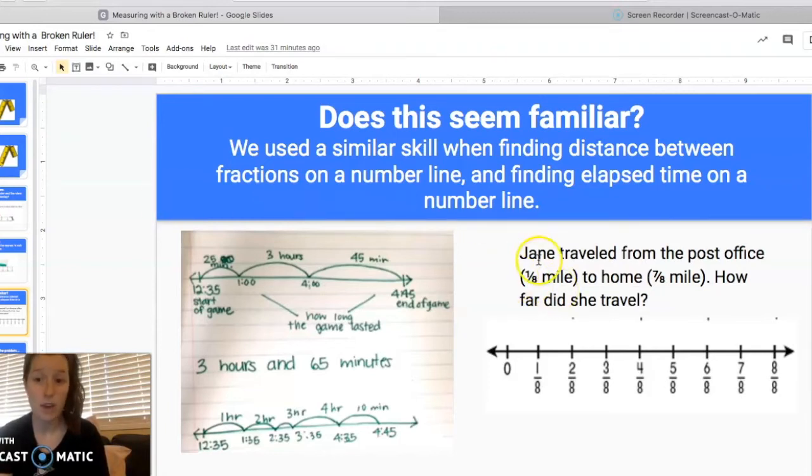We used a similar skill when we were finding distance between fractions on a number line. So like when Jane traveled from the post office to her home and we had to figure out how far she traveled. We also used this skill when we were finding elapsed time on a number line. So when we were trying to figure out how much time had passed between 12:35 and 4:45. So finding distance between two points on a number line is not brand new to us.